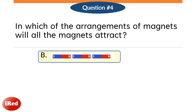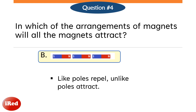In magnets, like poles repel while unlike poles attract. In this arrangement, all magnets will attract because the end of each magnet is facing the opposite pole of the other magnet.